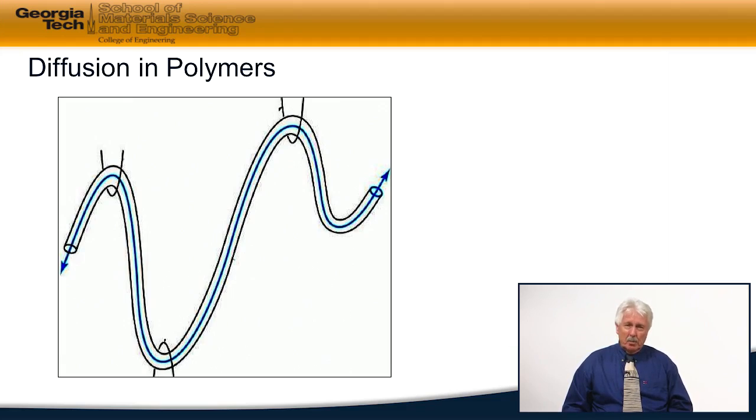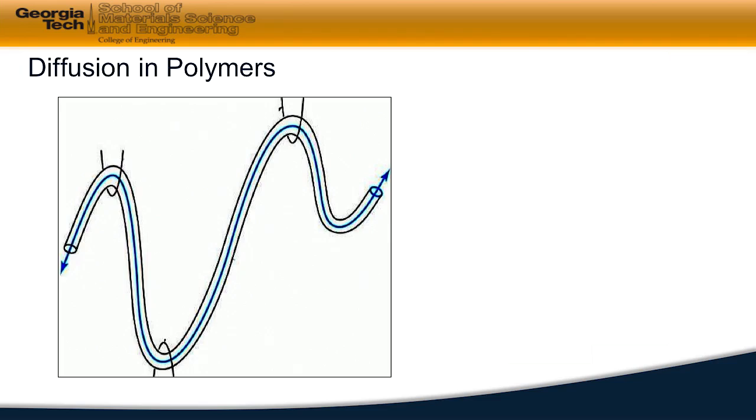Here is an example of this polymer chain. What we're going to look at is this structure is a coiled structure, and it's coiled because of entropic effects.